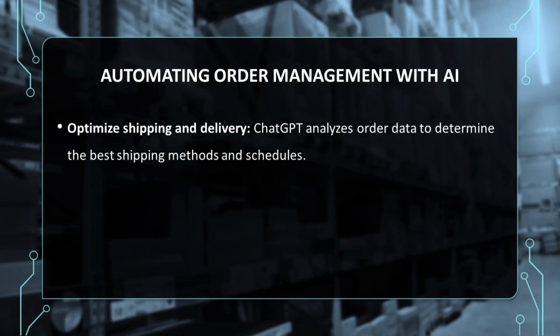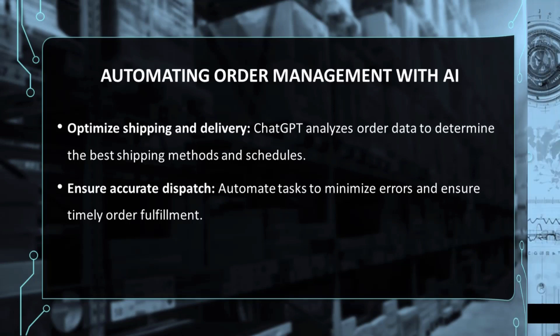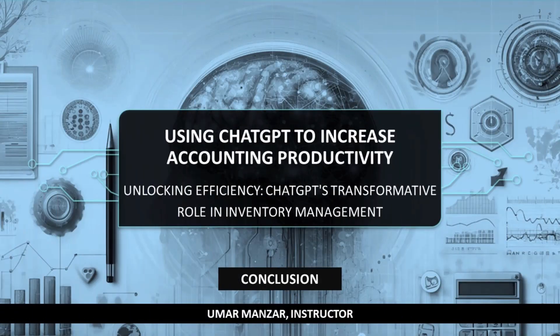Through analysis of order data, ChatGPT can automate order management tasks as well, determining optimal shipping methods, delivery schedules, and order quantities. This automation not only minimizes errors in the order fulfillment process, but also ensures orders are dispatched accurately and punctually.